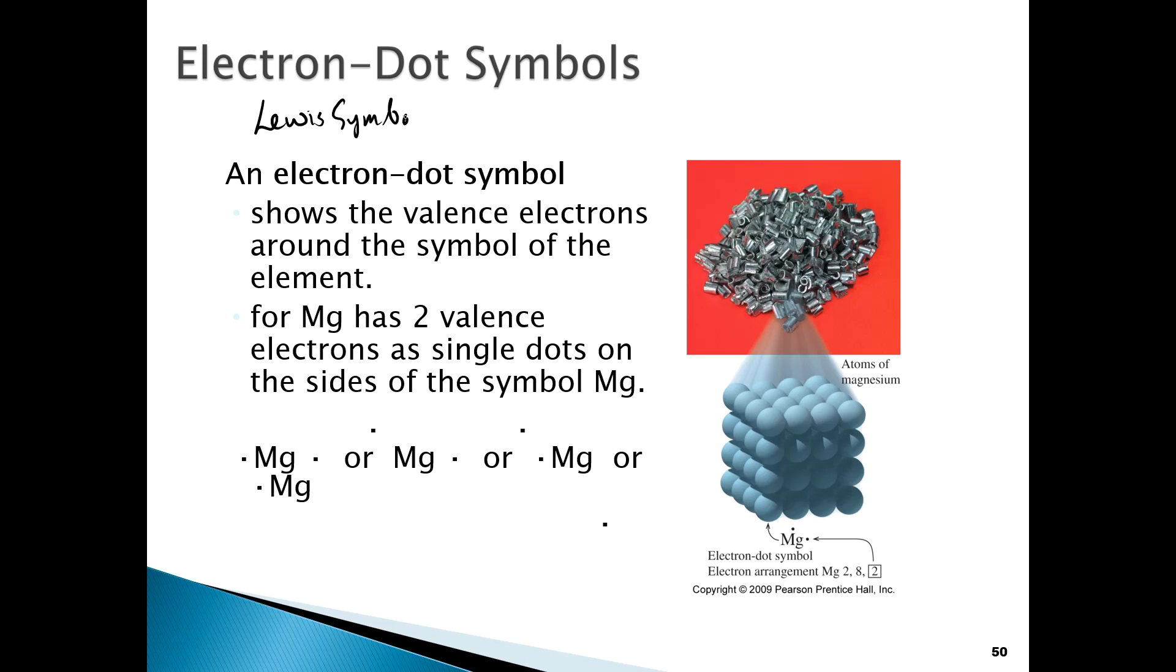If you hear me use the term Lewis symbols, it's the same thing as electron-dot symbols. This is a way of representing an atom in terms of the number of valence electrons that it has. It's a very simple idea.